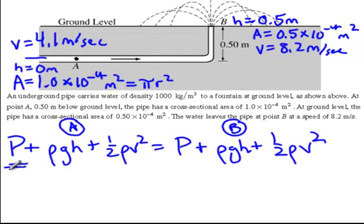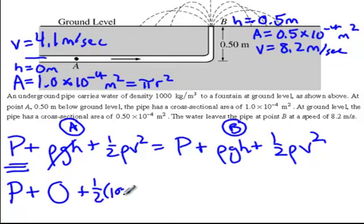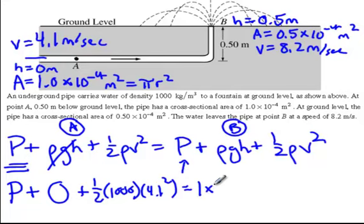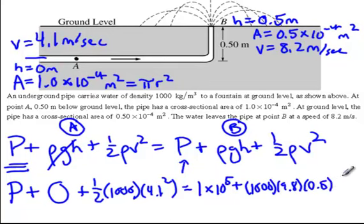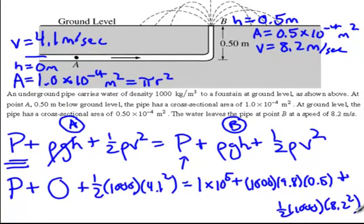We're trying to find the pressure at point A — my absolute pressure. The height at point A is zero, so that term drops out. I have one-half times density of water (1,000) times velocity (4.1) squared. Since I'm trying to find absolute pressure, the pressure at point B is 1 times 10 to the fifth — the absolute atmospheric pressure. If I just wanted gauge pressure, I'd leave that at zero. I have rho GH: 1,000 times 9.8 times height of 0.5, and one-half rho V squared: one-half times 1,000 times 8.2 squared. This ends up being just an addition and subtraction problem.